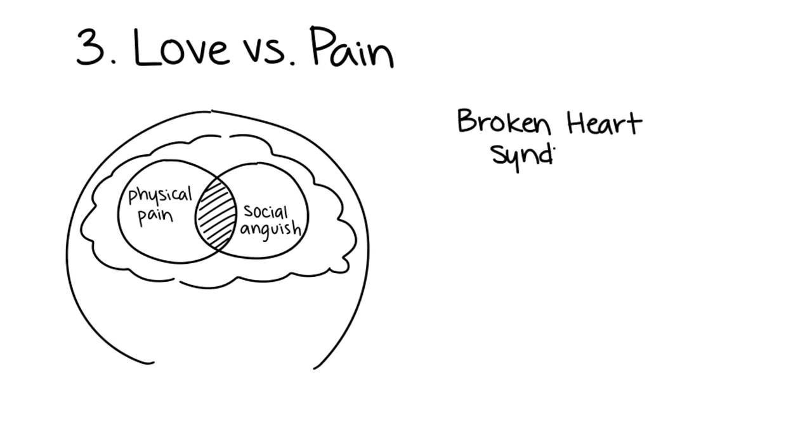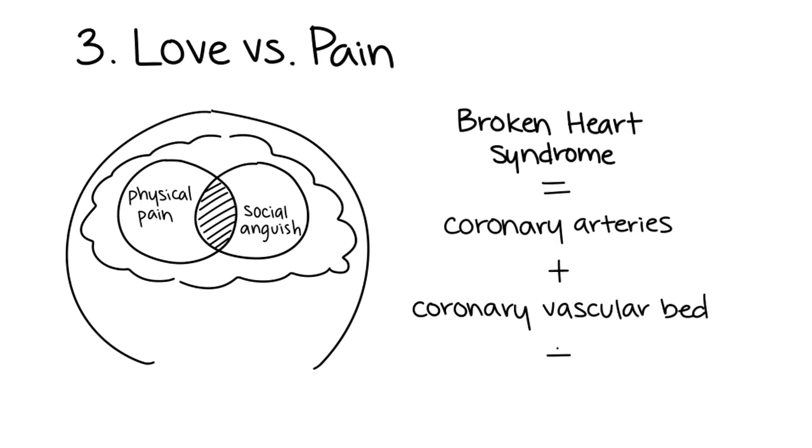Number four: Broken heart syndrome is characterized by normal coronary arteries, regional wall motion abnormalities that extend beyond a single coronary vascular bed, and often a precipitating stressor. It's a temporary condition that is often brought on by stressful situations, such as the death of a loved one.